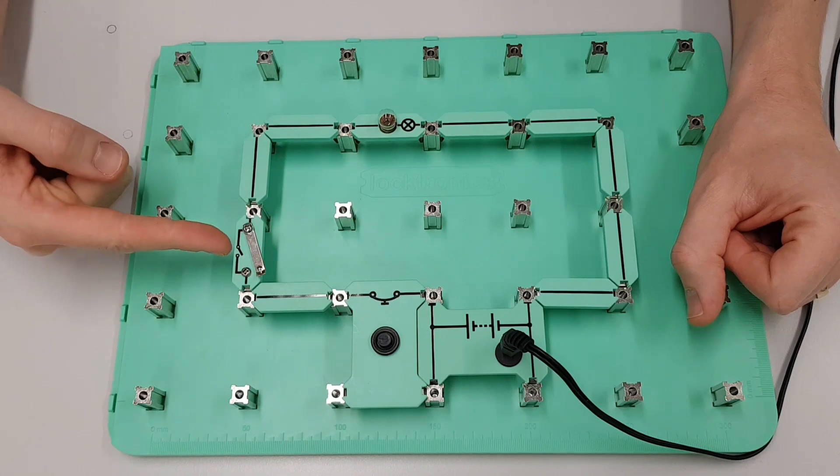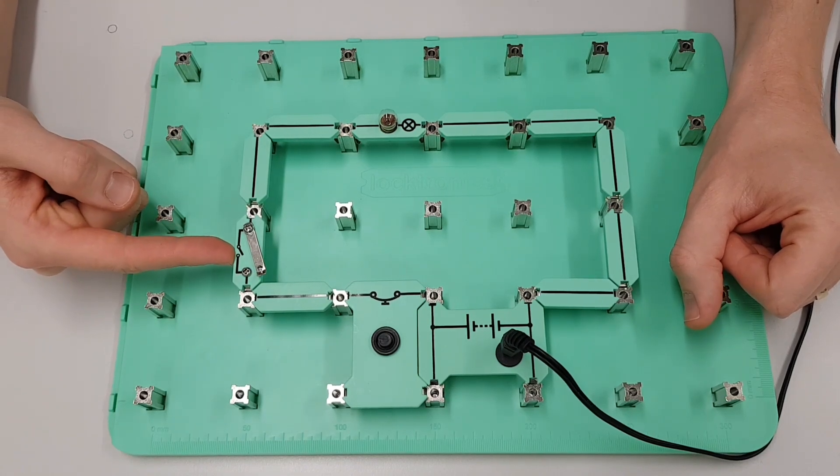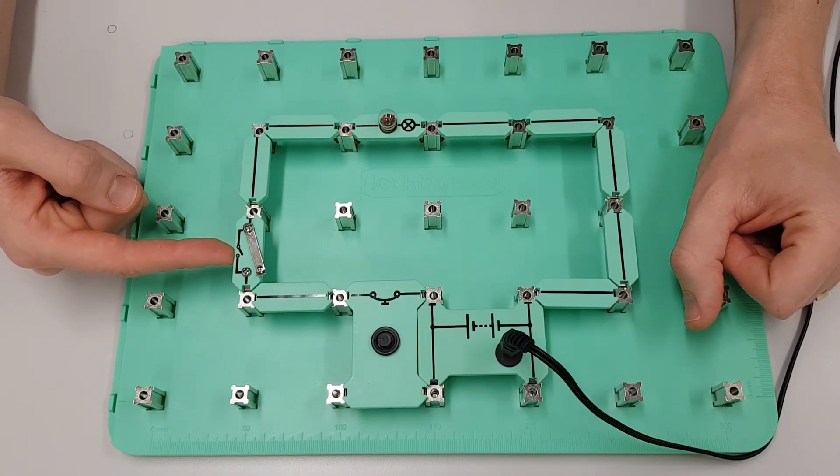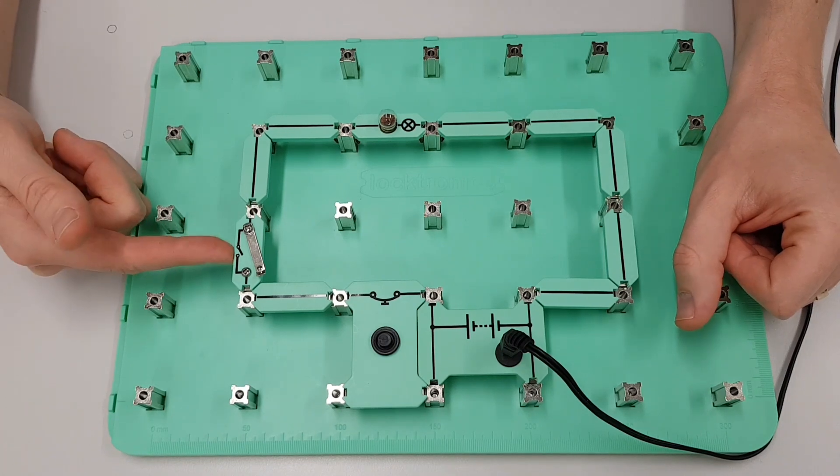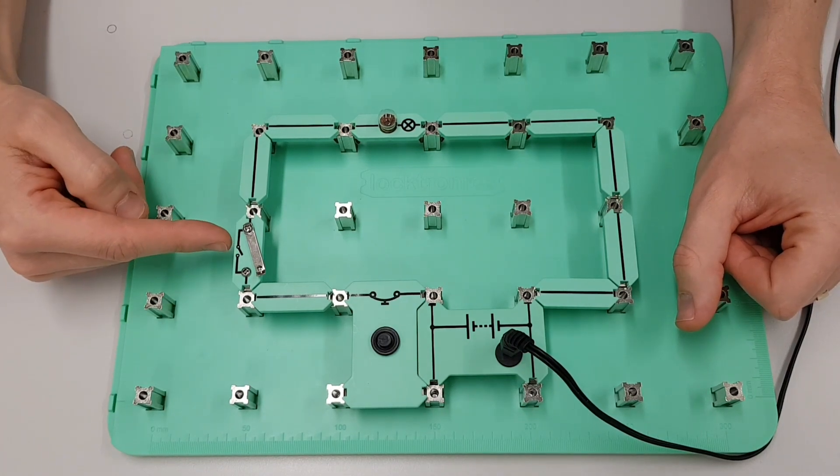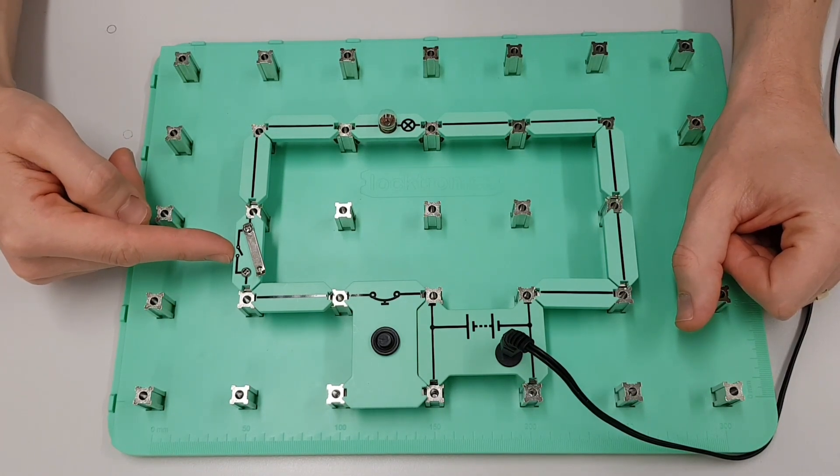We've then got moving around the circuit some kind of circuit control. In this case we've got a switch. Again there's different kinds, relays, contactors, etc. But in this case we've got a simple switch.